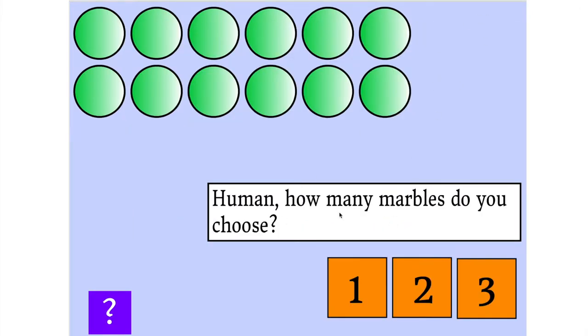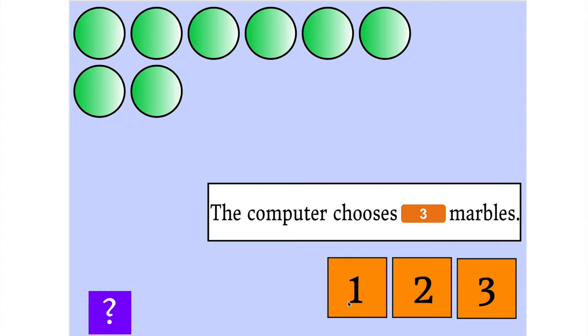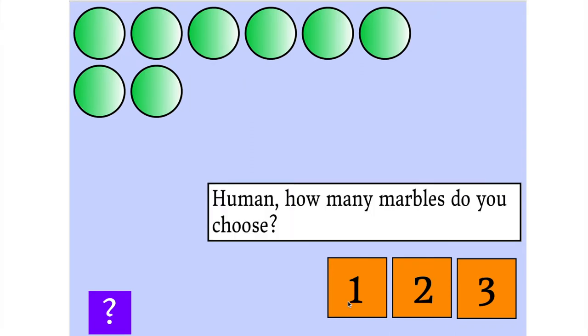It asks me here, human, how many marbles do I choose? So let's say I just pick one marble, and we should see that one marble disappear. Now the computer is choosing three marbles, and we saw those disappear.